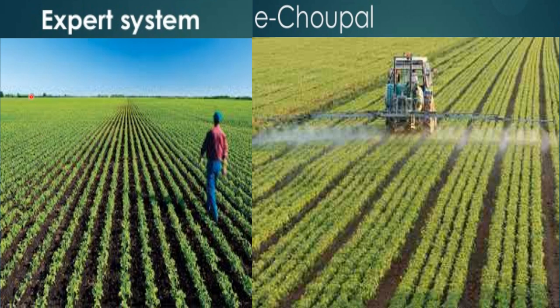Expert system — Agri Daksha: a tool for building online expert systems for various crops, developed at the Division of Computer Application, Indian Agricultural Statistics Research Institute, New Delhi. Agri Daksha has modules on knowledge model creation, knowledge acquisition, problem identification, knowledge retrieval, asking questions to experts, and administration. It enables domain experts to build online expert systems in their crop with minimal intervention of knowledge engineers and programmers.